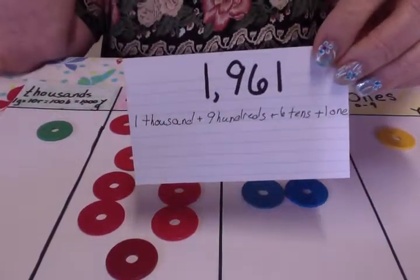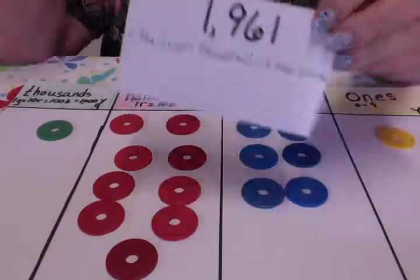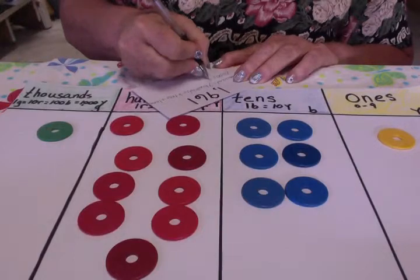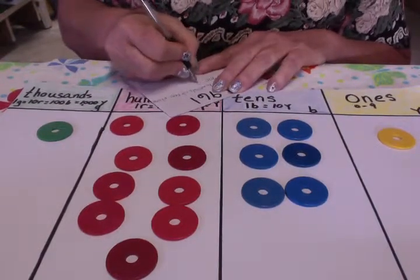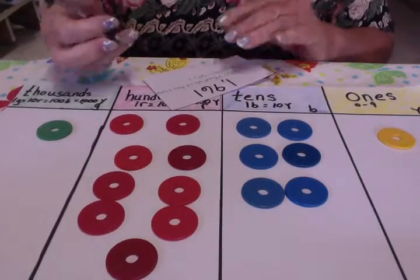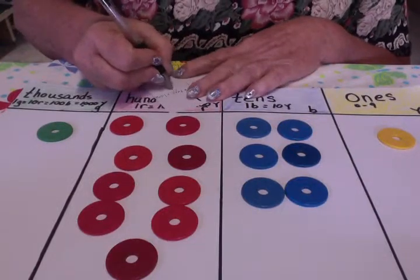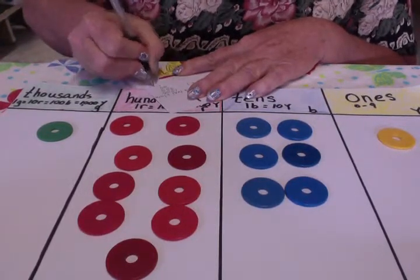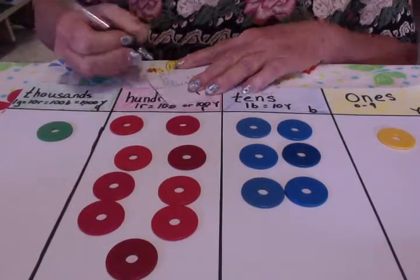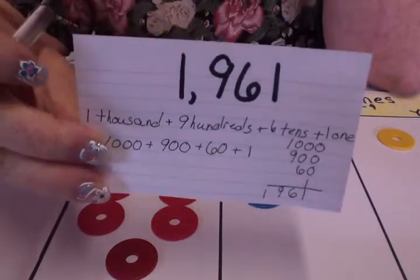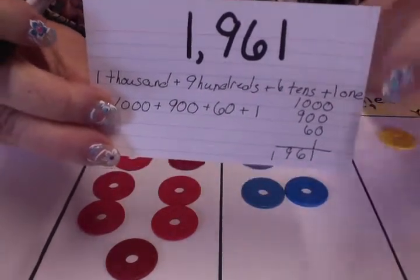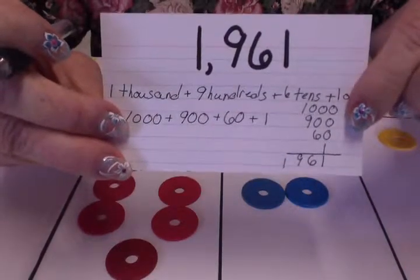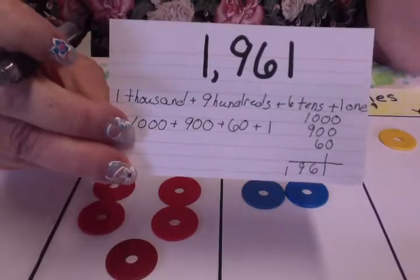I'm going to write it vertically so that we can see it that way too: one thousand, nine hundred, sixty, one. You see how it all falls right in line here? And when we say it, we actually are saying those numbers: one thousand, nine hundred, sixty, one.